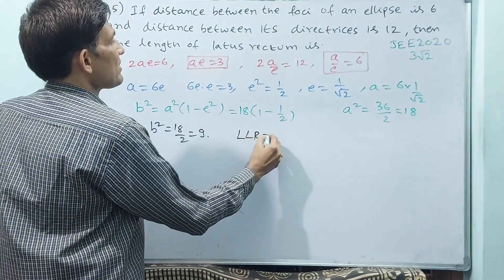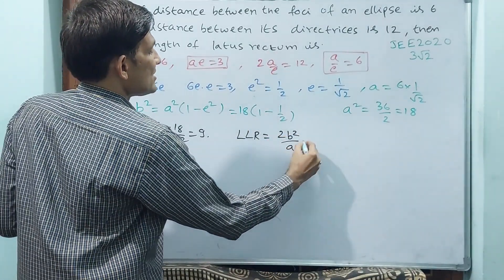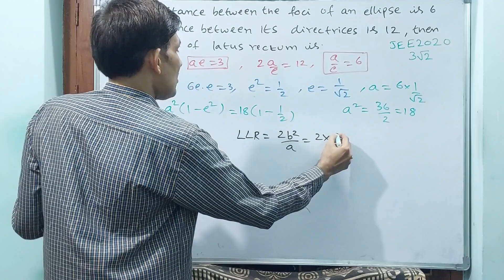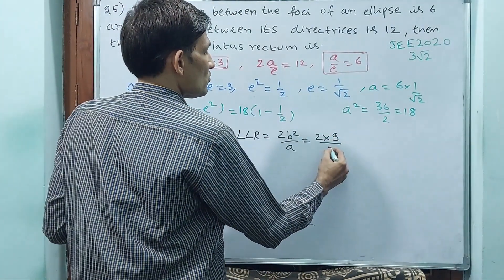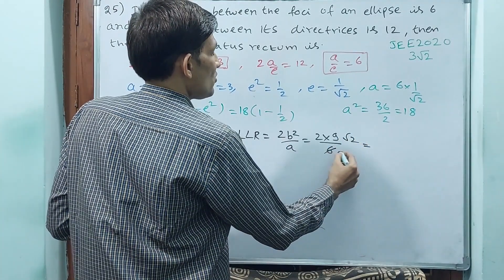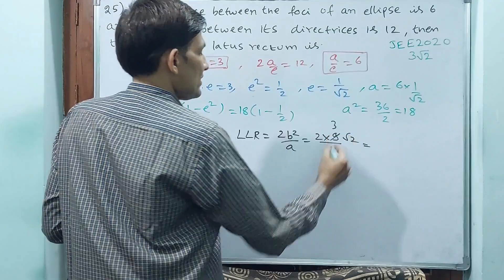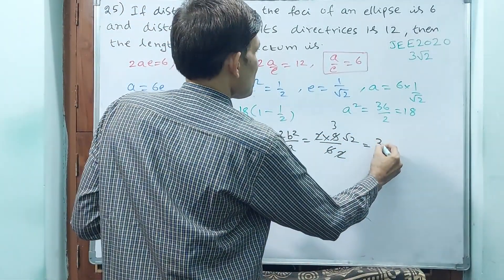Now you can write, length of latus rectum LLR is 2B²/A. 2 B² value, A value is 6 by root 2. 3 times 2, 3 times 3. 2 goes to that, cancel. Now that means 3 root 2 is the answer.